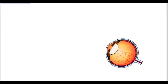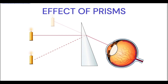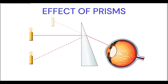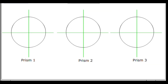Effect of Prisms: To the observer viewing an object O through an ophthalmic prism, the prism's effect is to move the object to an apparent position O prime. In fact, the object is still positioned at O and its appearance would be otherwise unchanged. As the prism has no effect on vergences, an object viewed through a prism will get displaced towards the prism apex.